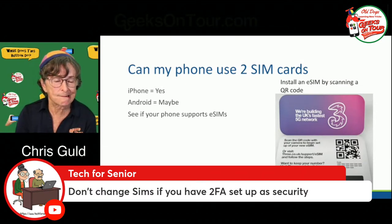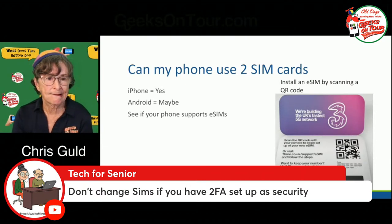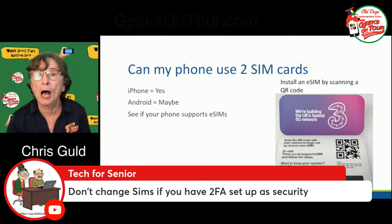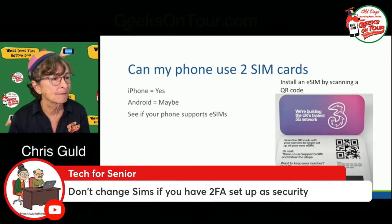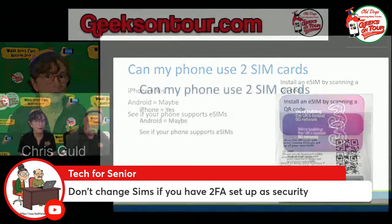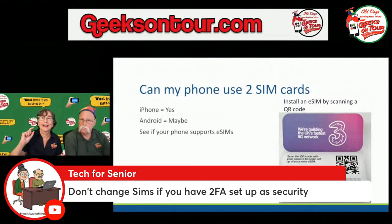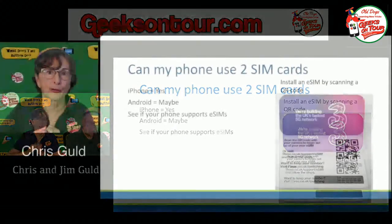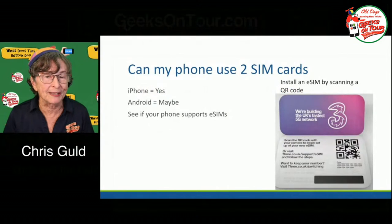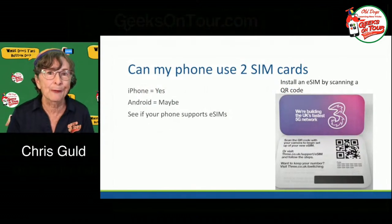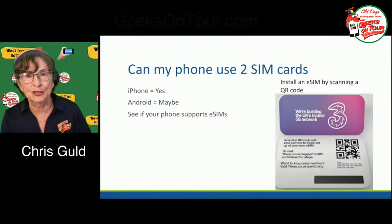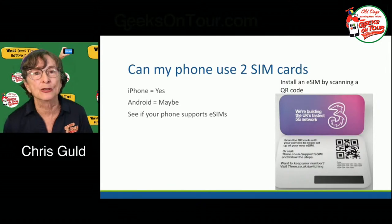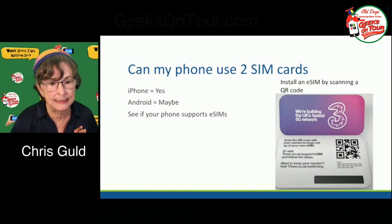Ron notes: don't change SIMs if you have two-factor authentication set up, because that changes your phone number. One workaround is Google Voice — both my phones ring on the same Google Voice phone number. If you change the eSIM, just add it to your Google Voice lines. To get Google Fi, go to fi.google.com — and if you use our referral link in the YouTube notes below, we each get $20 credit.